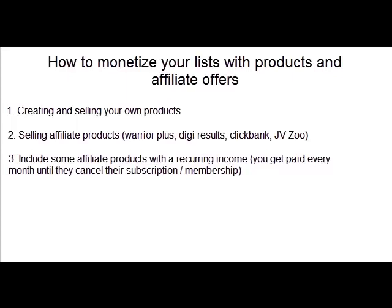Tip two is to sell affiliate products, using platforms such as Warrior Plus, Digi Results, ClickBank, and JVZoo to find tons of products in various niches. Tip three is to include some type of residual recurring product which you can make money from every month until that person cancels. Using these three types of monetization methods — your own products, affiliate products, and recurring income products — your campaigns will be very profitable.